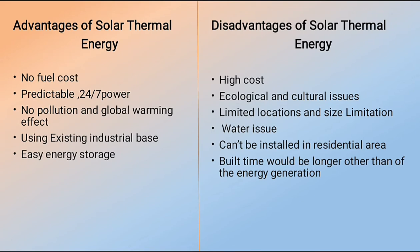Disadvantages include: high initial build cost; ecological and cultural issues from using large land areas for mirrors, which can impact wildlife in desert areas; limited location and size — plants can only be located where high solar radiation is available, such as deserts, and not in populated areas; water usage is a major issue in desert areas; unlike photovoltaic, solar thermal cannot be installed in residential areas due to large space requirements; and build time is longer than other energy generation methods.